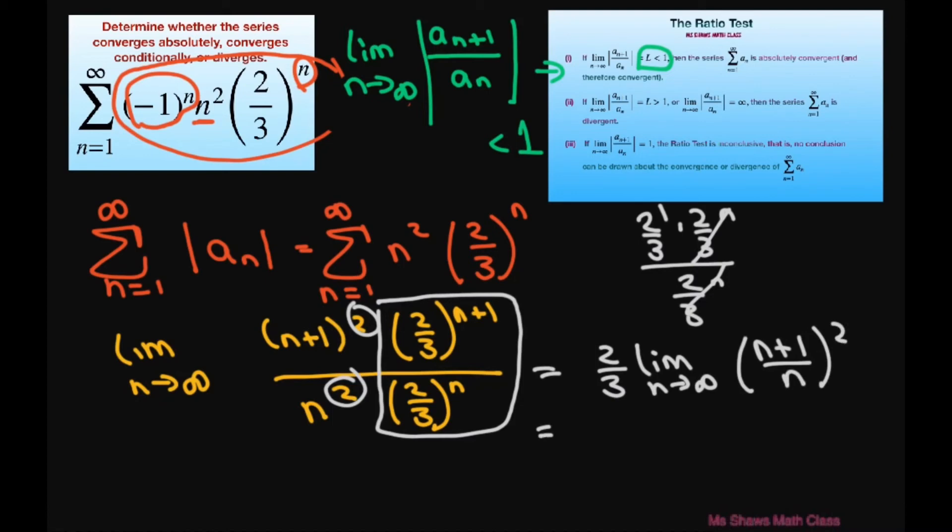So this is going to be 2 thirds. And when you do the limit for this, this is just going to equal 1. So this will be 2 thirds times 1, which equals 2 thirds. It's actually 1 squared, but that gives you 1. So you get 2 thirds, which is less than 1. Therefore, our series is absolutely convergent.